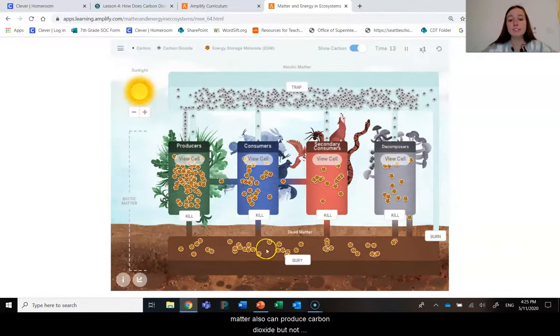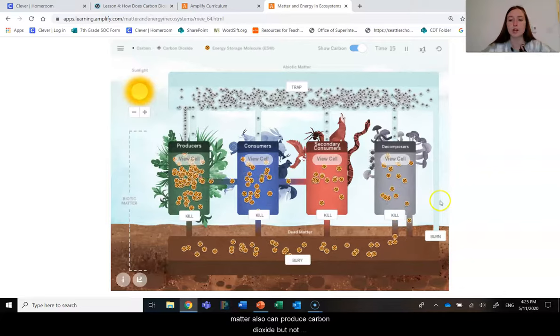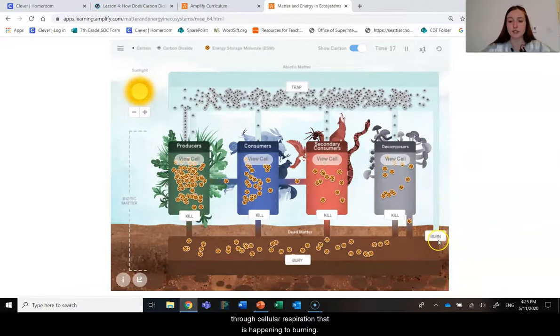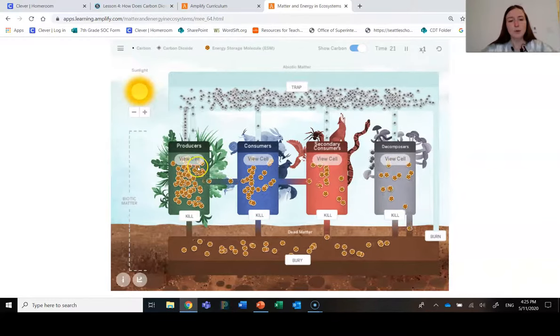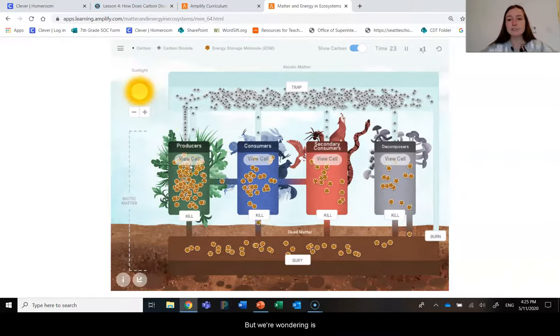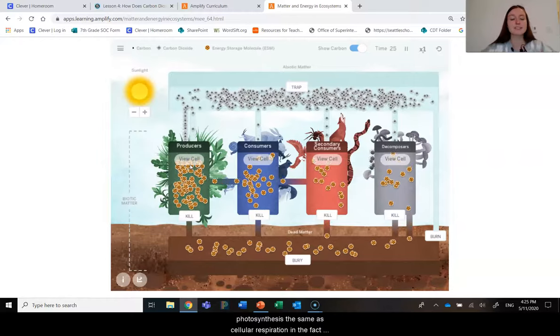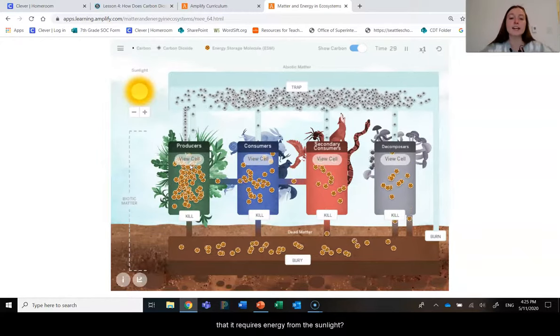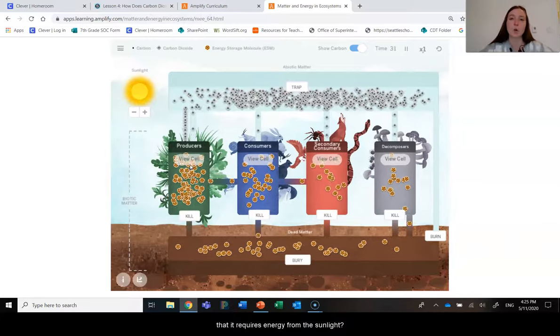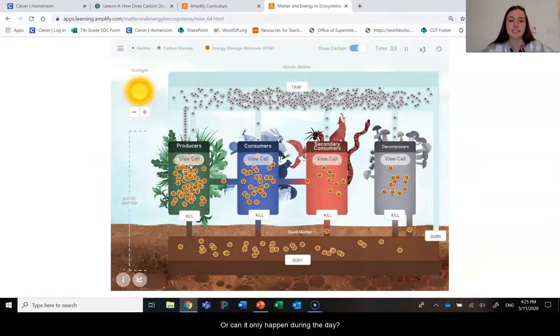And we know that the dead matter also can produce carbon dioxide, but not through cellular respiration. That is happening through burning. But we're wondering, is photosynthesis the same as cellular respiration in the fact that it requires energy from the sunlight, or it can only happen during the day?